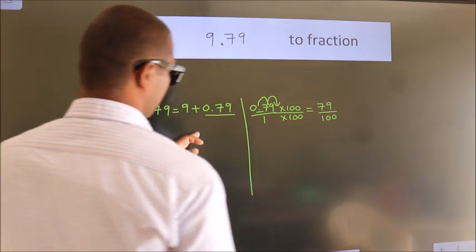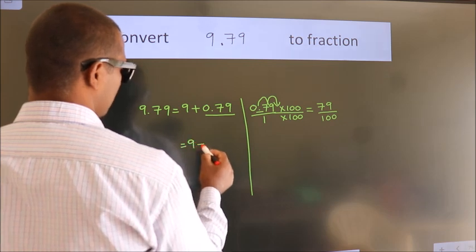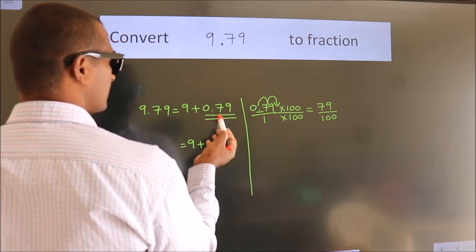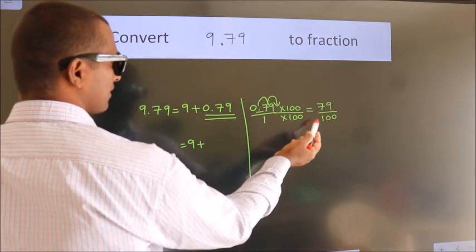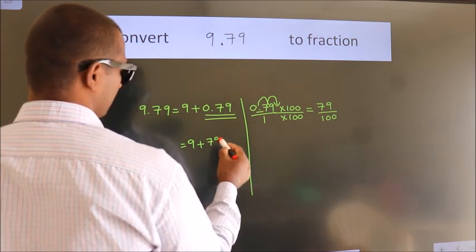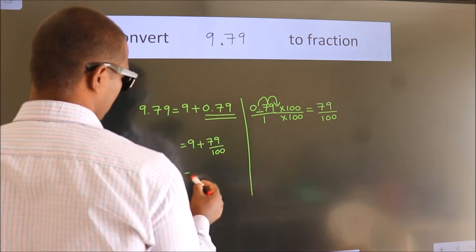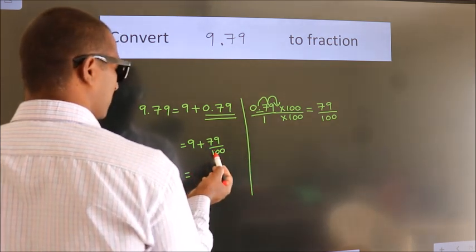Now here, 9 plus in place of 0.79, we write this fraction: 79 by 100. 9 plus 79 by 100.